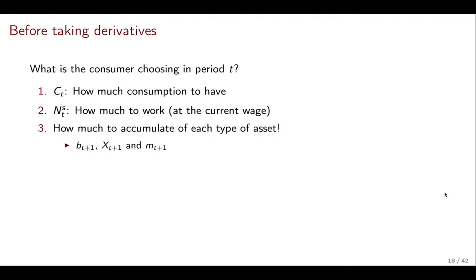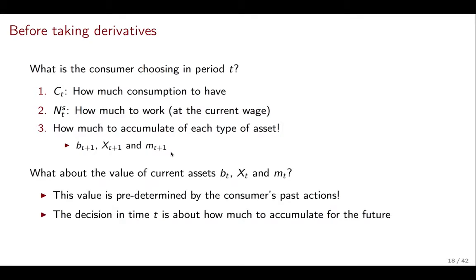So now we have the Lagrangian. Before we go ahead and just take derivatives with everything, let's think, what is the consumer choosing in a given period t? Well, for sure it's choosing how much to consume and how much to work. But then the other things that the consumer is choosing is how much to accumulate of every type of asset: how much BT+1 to have, XT+1 to have, and MT+1 to have. And this is important to realize. What the consumer is choosing today is the assets that they're going to save today that pay tomorrow. What about the value of current assets, BT, XT, and MT? Well, if you're already in period t, the value of those assets is already predetermined by previous actions. The decision in time t is all about accumulating for the future. That's the dynamic version. So we don't need to worry about the value of BT, XT, and MT because that's going to be determined by other choices. We're going to focus on the choices in period t.